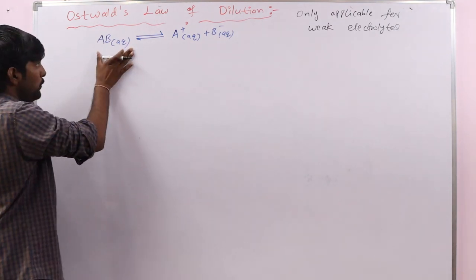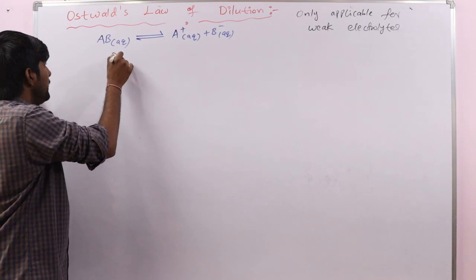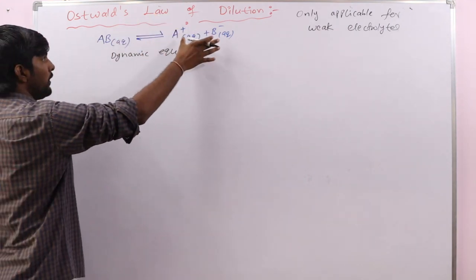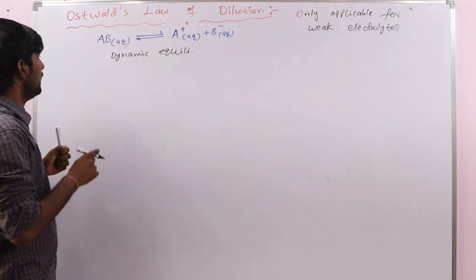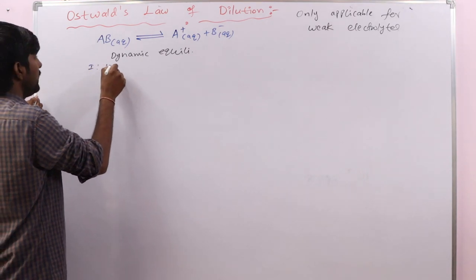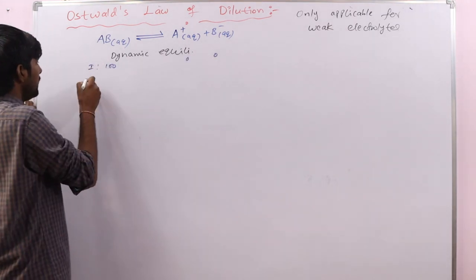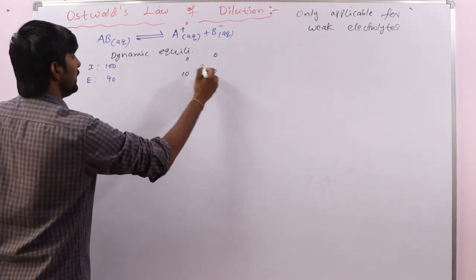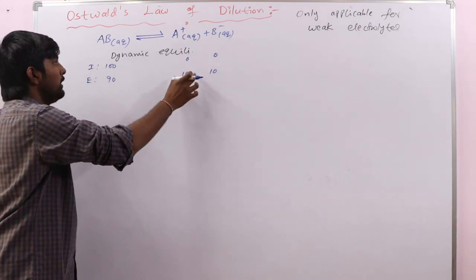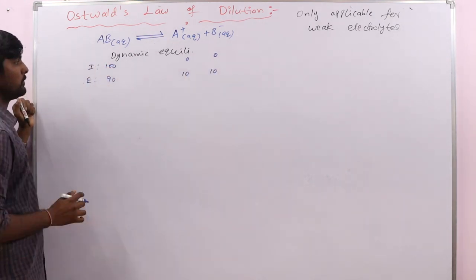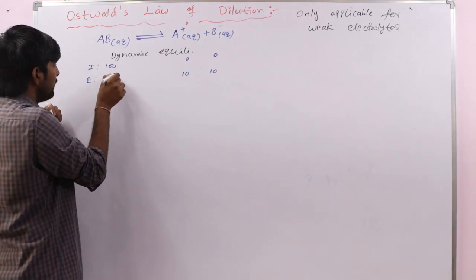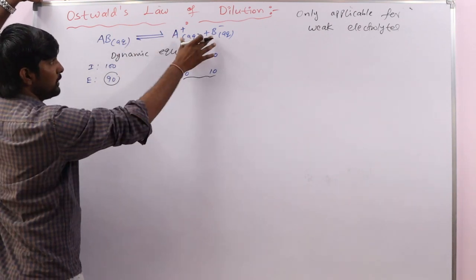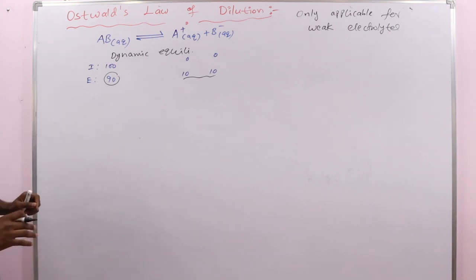Only a few molecules are dissociated, and a dynamic equilibrium exists between the formed ions and the undissociated molecules. For example, if we initially have 100 molecules with no ions formed, then at equilibrium 10 molecules dissociate, giving 10 cations and 10 anions, while the remaining 90 are undissociated. Some molecules dissociate and then reassociate to reform AB, and this continues.